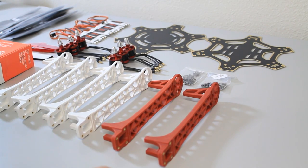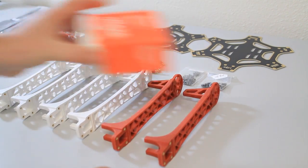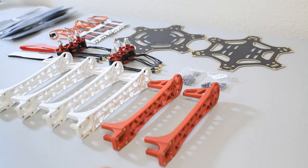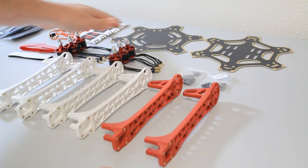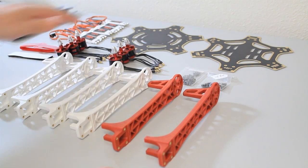All right, so we got the 550 Nasa ARF. It's all unpacked. Got your Nasa controller here. We'll open that up here in a little bit. Power distribution boards, ESCs, motors.